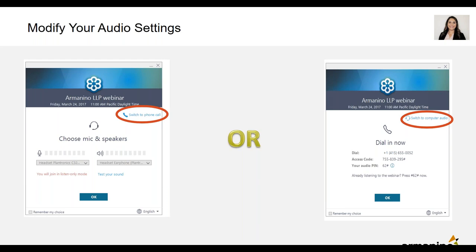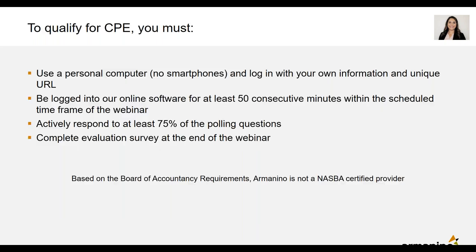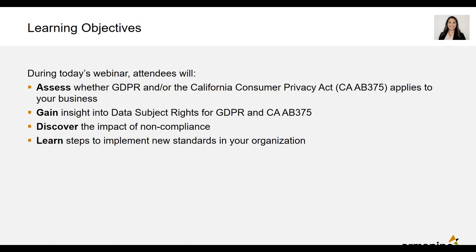A few quick things about California CPE: make sure you're using your own personal computer, logged in with your own personal information and unique URL. Be logged into our online software for at least 50 consecutive minutes within the scheduled timeframe and actively respond to at least 75% of the polling questions. Today we're going to have four polling questions, so make sure you answer at least three. Also, make sure you complete the evaluation survey at the end. As a participant, you will receive a link to download the slide deck and recording within 72 hours of the presentation.